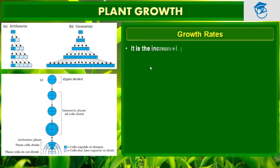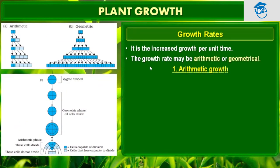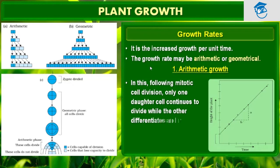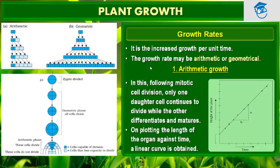Now comes growth rate. It is the increased growth per unit time. The growth rate may be arithmetic or geometrical. The rate of growth can be expressed mathematically — that is, how much a plant has grown per unit time is called the growth rate.